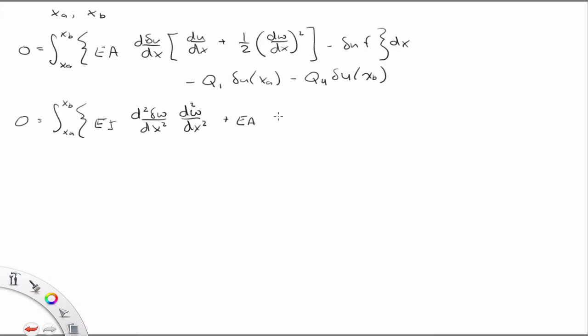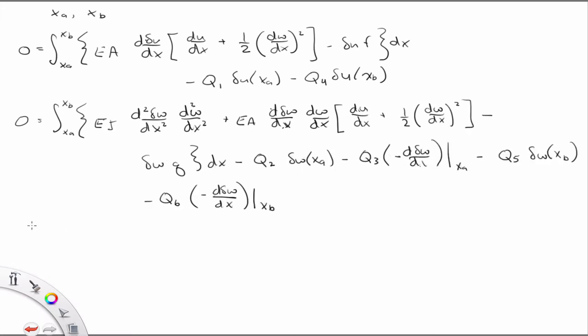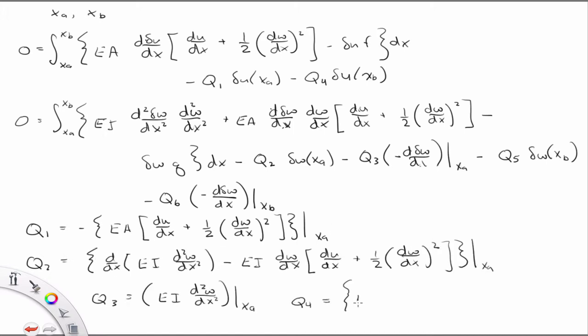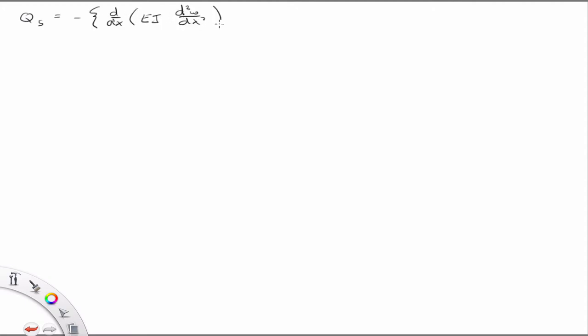So the weak form over an element with endpoints xA and xB.